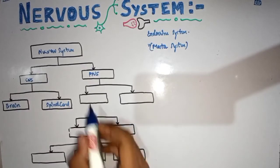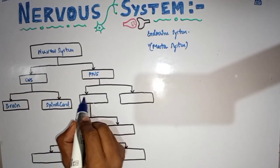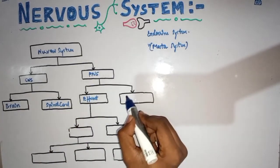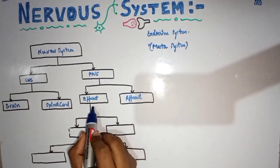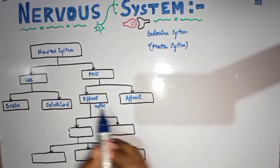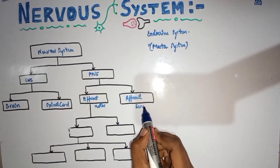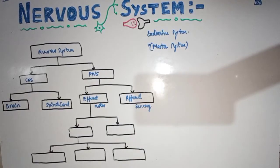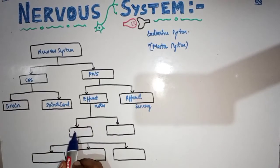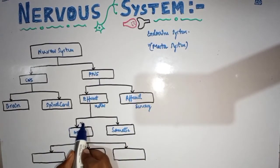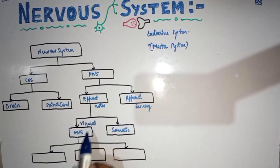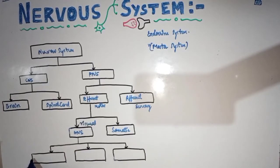The peripheral nervous system is divided into efferent and afferent parts. Efferent refers to motor nerves, and afferent means sensory nerves. The efferent nervous system is again divided into the autonomic nervous system, ANS — also called the visceral motor system — and the somatic efferent motor system.